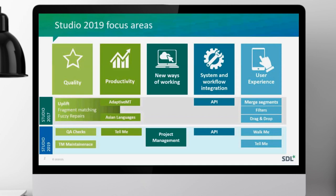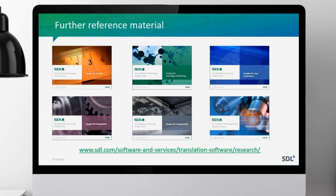Just to round off — there is a lot of data, and it's clearly not possible to present it all today. If you're interested in further reference material, we have six individual eBooks that go much further than today's presentation, split into the individual insights including quality, new ways of working, and more. There is also an overall executive summary available to download via the link on the slide. I strongly recommend downloading it — not only will you get further stats, you'll also get clearer recommendations on how to solve the issues that come up in the research.